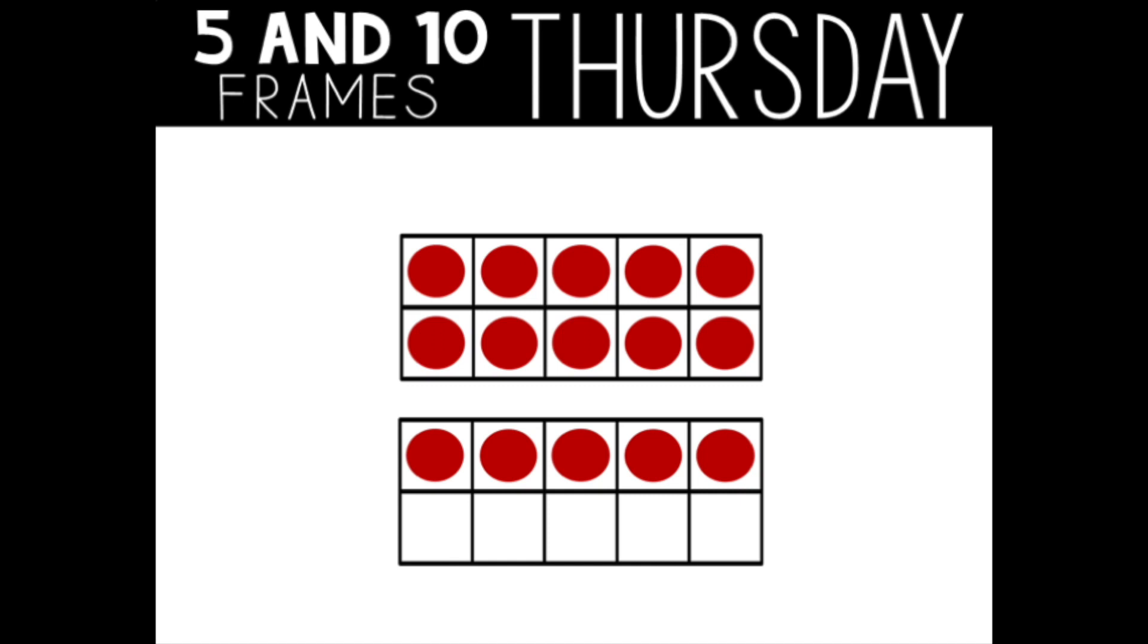I noticed the top 10 frame is full. The bottom 10 frame has 5. 10 and 5 more equal 15. I can think of it like 10s and 1s. One group of 10 and 5 lonely ones is 15. Did you find your answer in a different way?